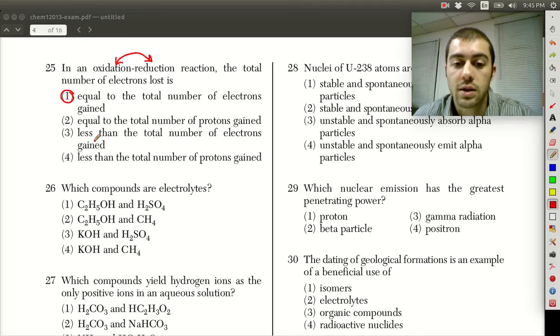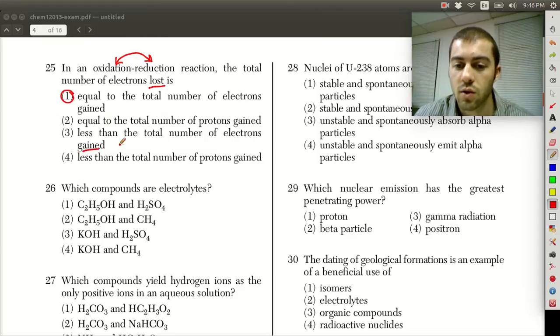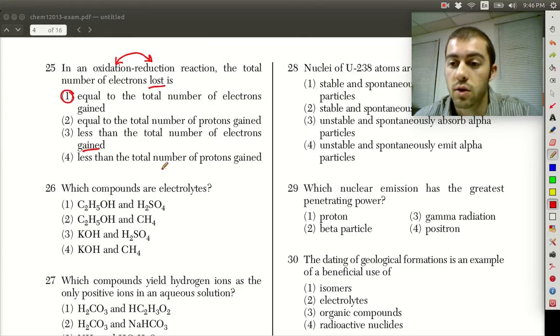If it were less than the total number of electrons gained, then that would mean that we would end up gaining electrons out of thin air because this element that lost electrons didn't lose as many as were gained. Where did those extra electrons come from? It doesn't make sense. So number one is the choice. The number of electrons transferred in either direction, lost or gained, has to be the same.